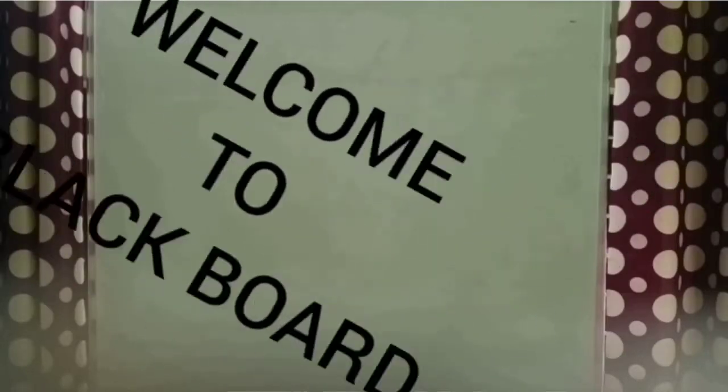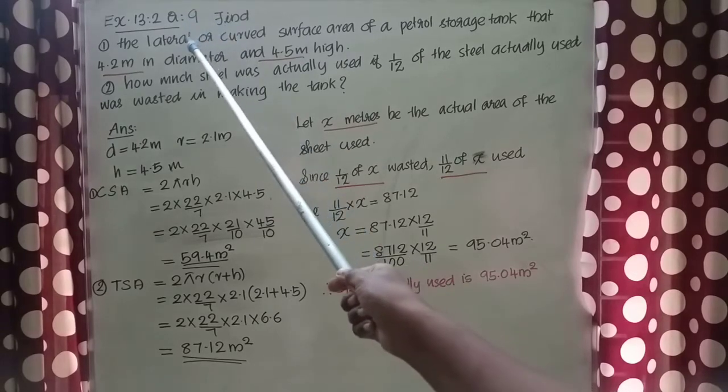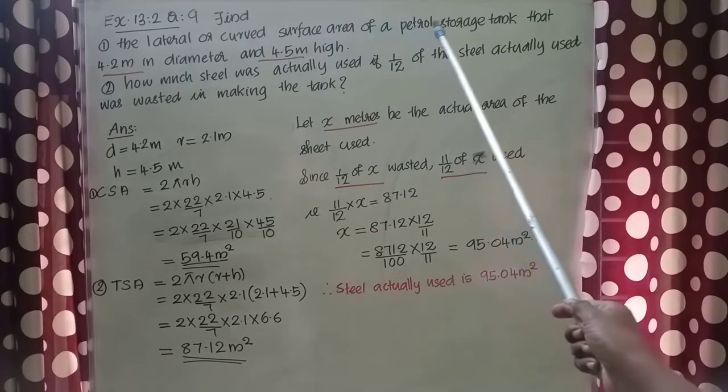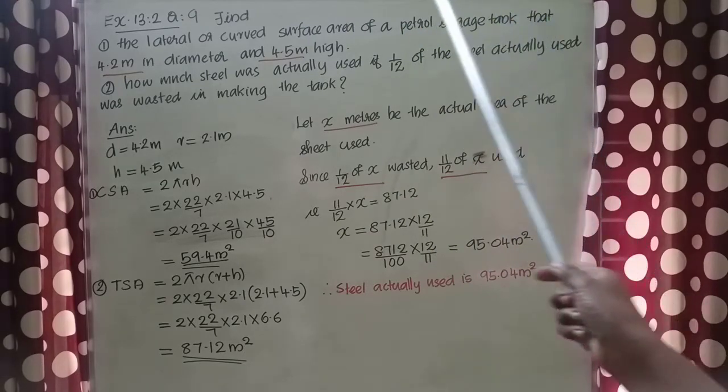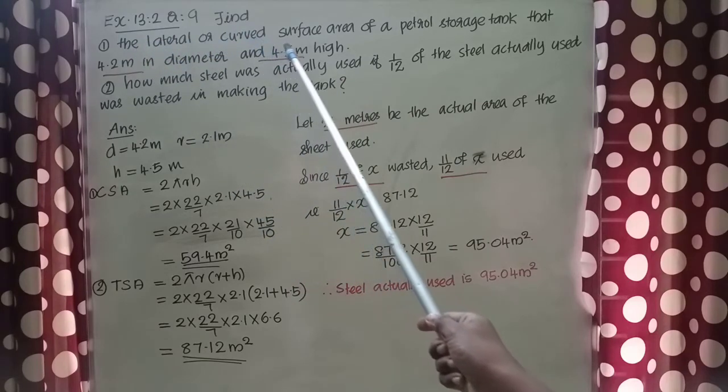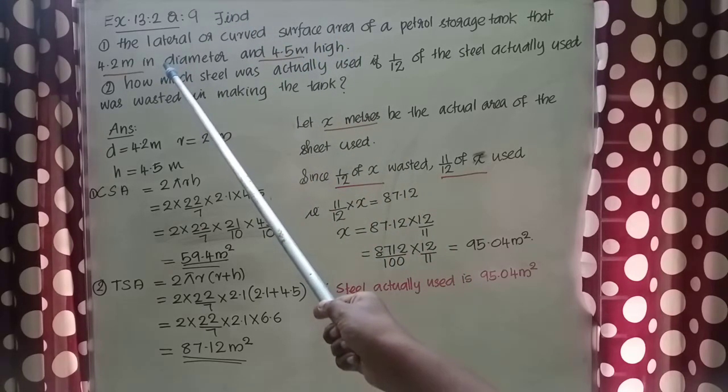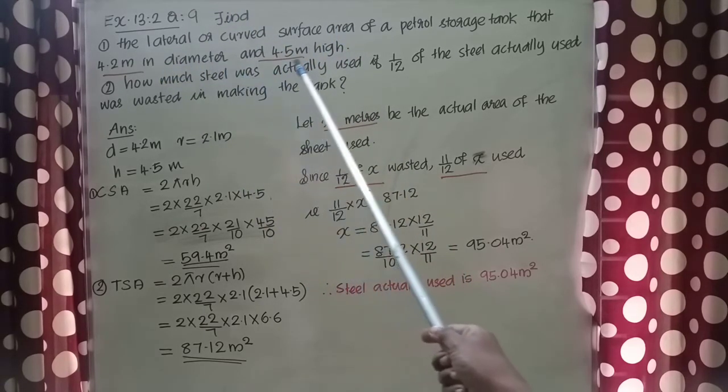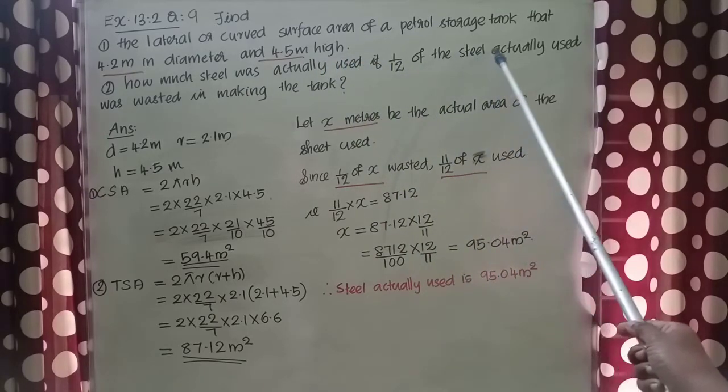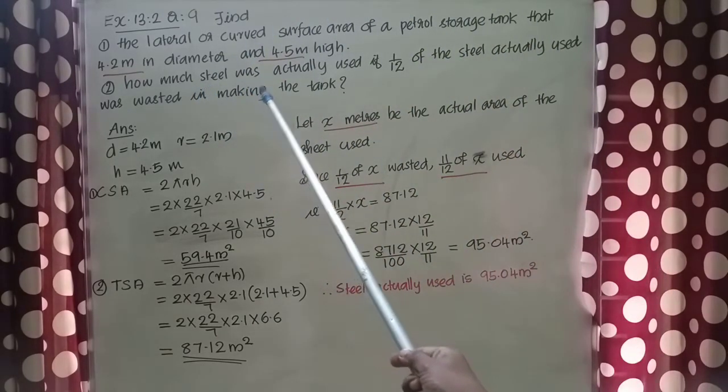Dear students, welcome to Blackboard. Find the lateral or curved surface area of a petrol storage tank that is 4.2 meter in diameter and 4.5 meter high. Second question, how much steel was actually used if 1 by 12 of the steel actually used was wasted in making the tank?